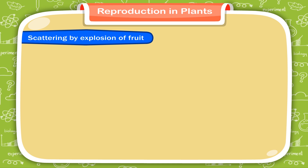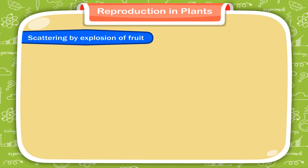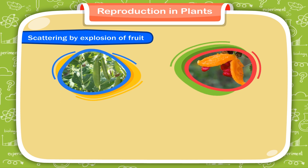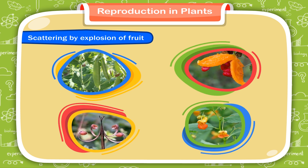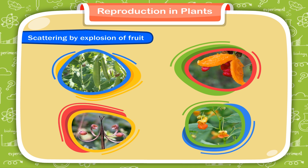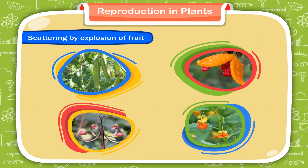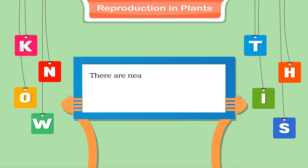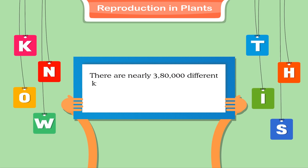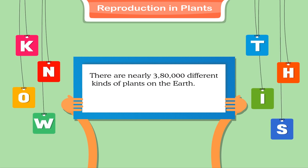Scattering by explosion of fruit: some fruits like pea, balsam, geranium and touch-me-not plants explode on drying. Their seeds are thrown out and scattered away from the parent plants. Know this: there are nearly 3,80,000 different kinds of plants on the earth. They are found everywhere except places which are completely dark and dry.